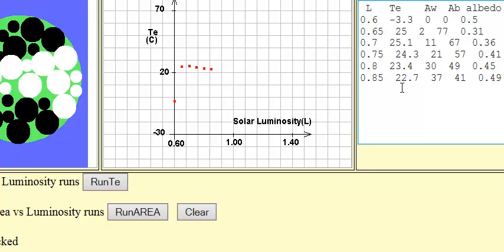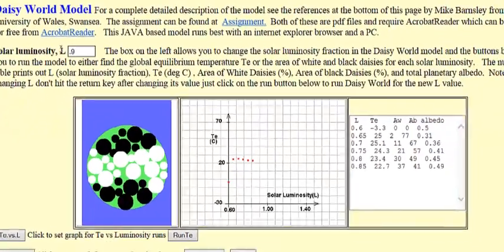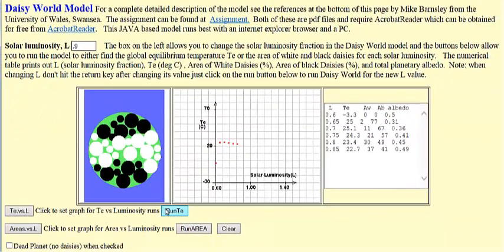22.7, 37, 41, and 0.49. When we're done with all of these, you can put the image on still and copy these numbers down from the table.